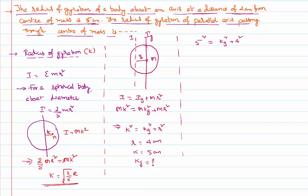So 25 = kg² + 16. Therefore kg² = 25 − 16 = 9, which implies kg = 3 centimeters. That is the radius of gyration of the same body about an axis passing through the center of gravity, expressed in terms of radius of gyration kg, where kg = 3 centimeters.